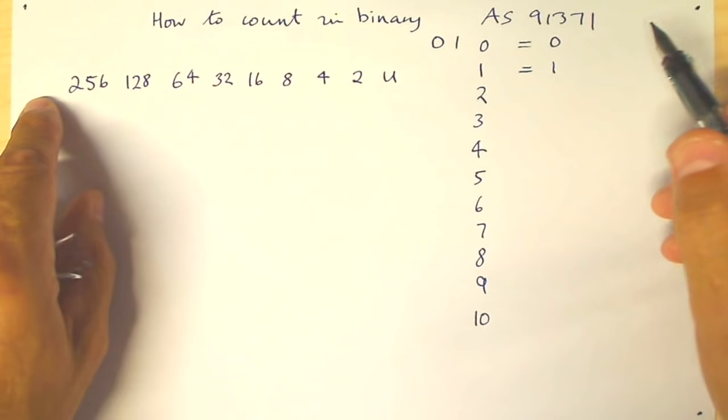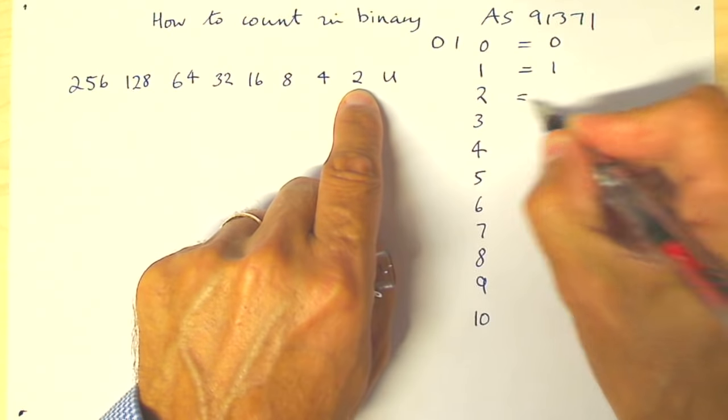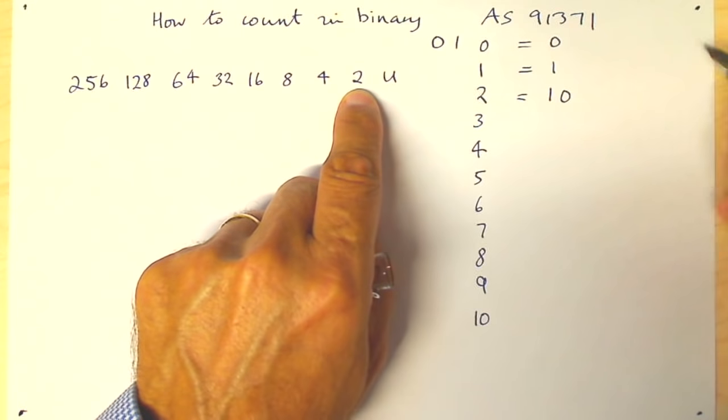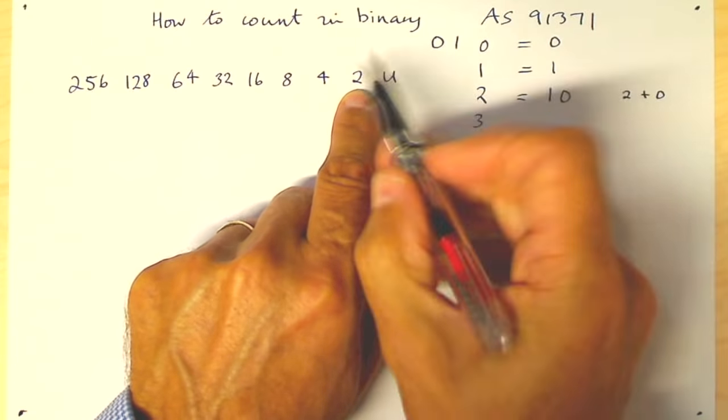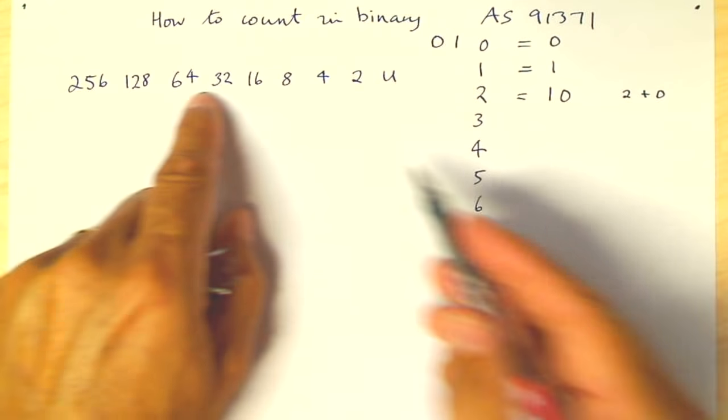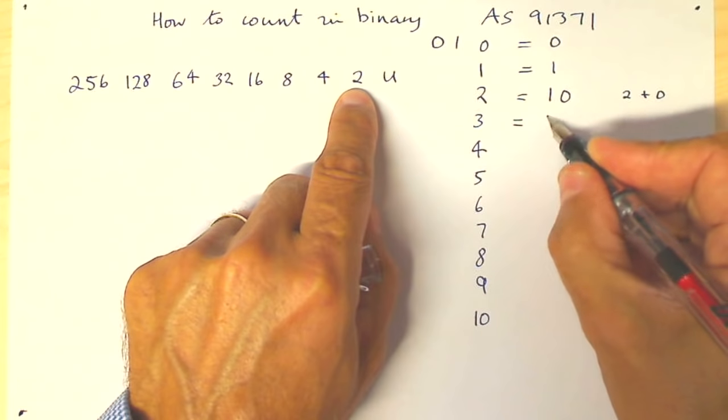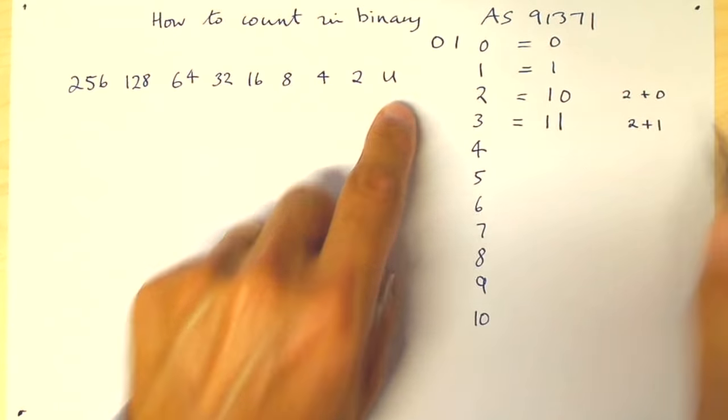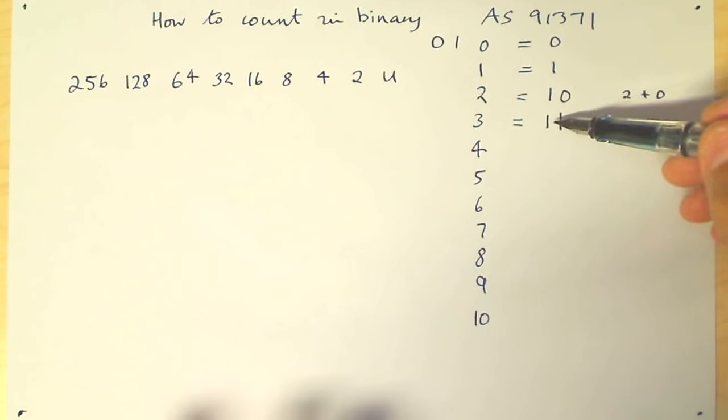So we're going to do number 2. We get to number 2 here, so we would have 1 two plus no units. So this is how it's worked out: 2 plus 0. Number 3, work along. Now 4 is too big, so we need a 2 and a 1. So how is that worked out? It's 2 plus 1. Notice that we don't call it 11. 3 is represented by the two digits, 1 and 1.